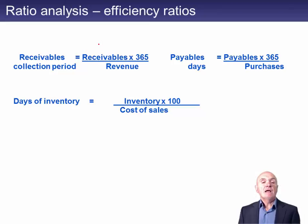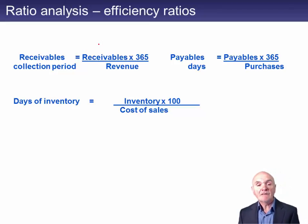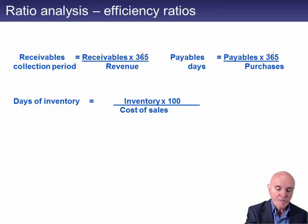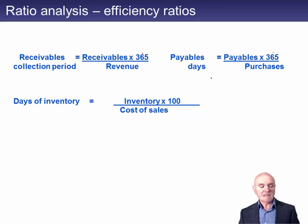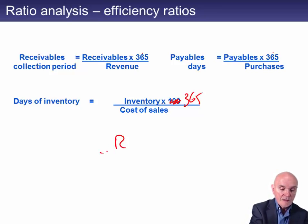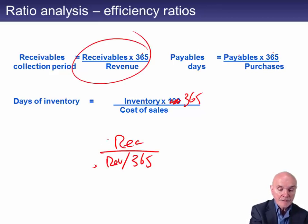Efficiency ratios really deal with payables, receivables, and inventory. For the receivables collection period, think of it as receivables over revenue per day — multiplied by 365. How many days' worth of revenue are tied up in receivables? That's exactly what it tells you.